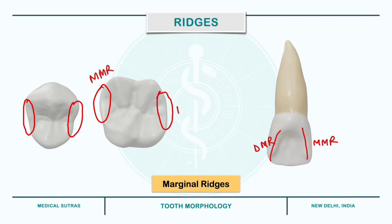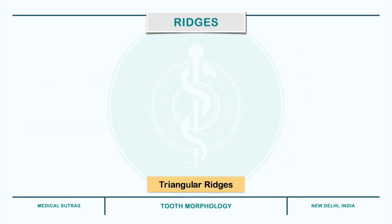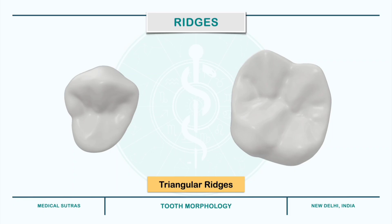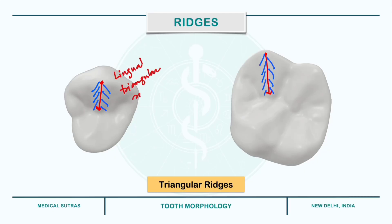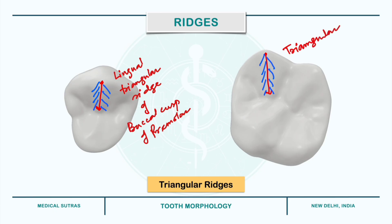Next we have triangular ridges. These descend from the tips of the cusps of premolars and molars to the central part of the occlusal surface. They are called triangular because the slopes of each side of the ridge resemble the sides of a triangle. They are named according to the cusp to which they belong, such as the lingual triangular ridge of the buccal cusp of a premolar, or the triangular ridge of the mesial buccal cusp of a molar.